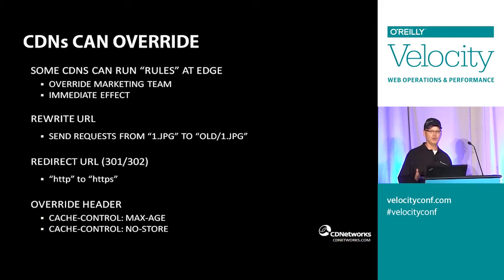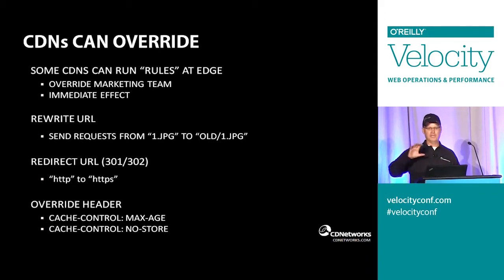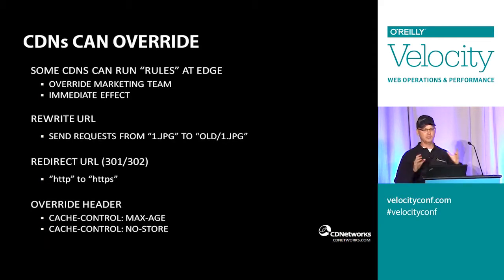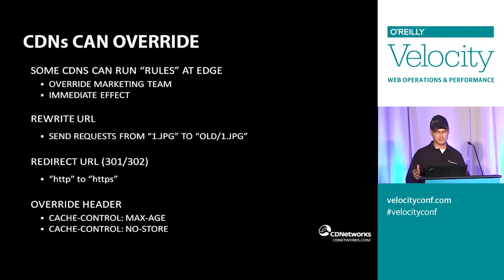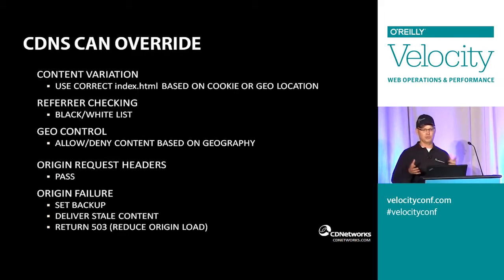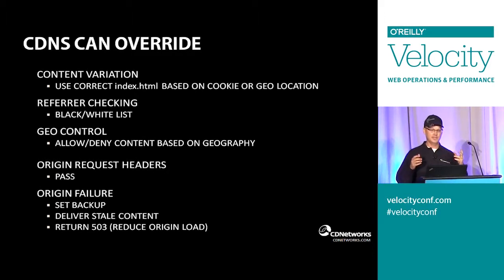If you're using a CDN with pops around the world and need to make changes quickly — sometimes overriding the web team or marketing team — a CDN can rewrite incoming URLs, redirect URLs, override any headers, change information, or vary content. For example, if you've got a different index.html based on a cookie or geolocation, you can send different ones. You can also black- and whitelist referrers and do geo-control, pass custom headers, and your full availability strategy needs to be in place.